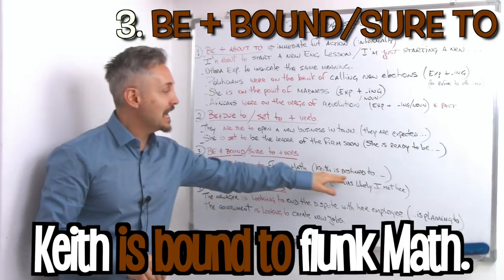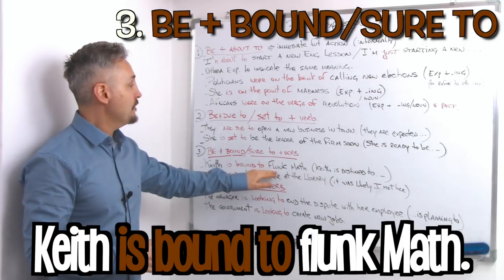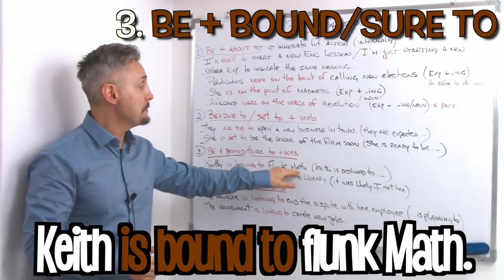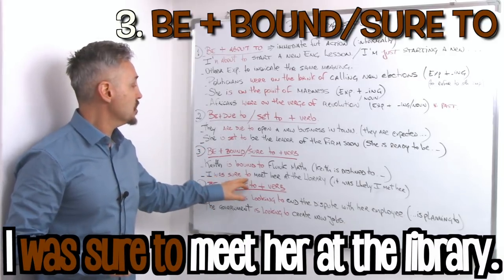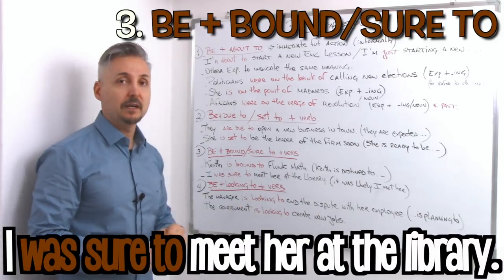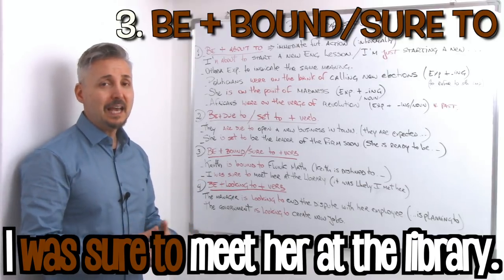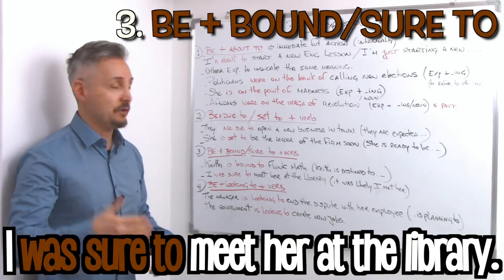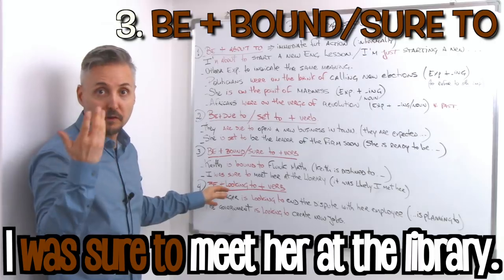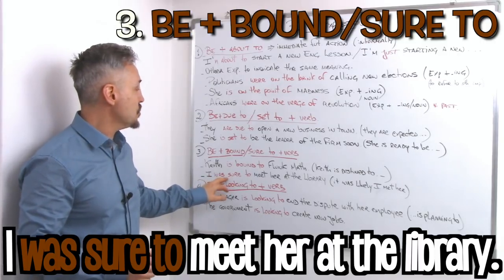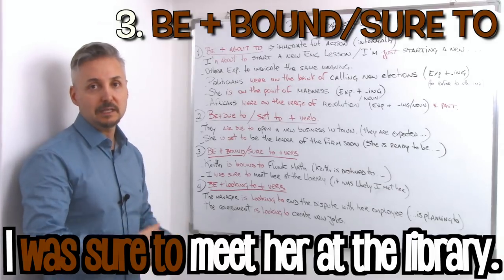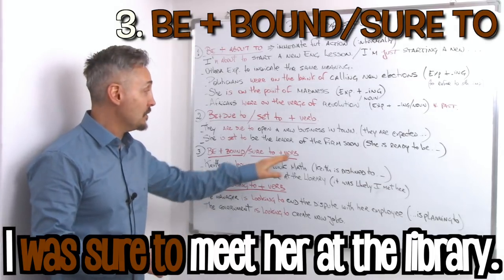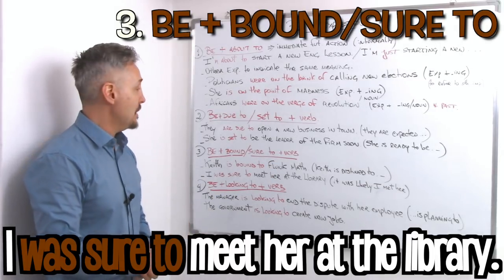So Keith is destined to fail or flunk math. So we have another example. I was sure to meet her at the library. This means it was likely I met her at the library but it didn't happen. So I was sure to be sure to meet, in this case a verb without ing, just a verb, the base of the verb, to meet her at the library.